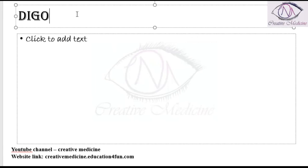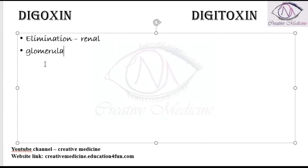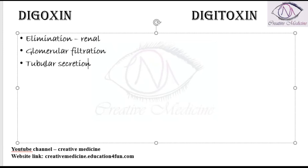The half-life of digoxin is around 24 hours. The elimination of digoxin is by the renal route — glomerular filtration occurs and also tubular secretion occurs.